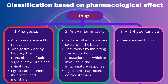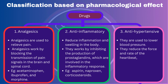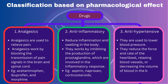Antihypertensive drugs: They are used to lower blood pressure. They reduce the force and rate of the heartbeat, relax blood vessels, or decrease the volume of blood in the body. They include drugs such as diuretics, beta-blockers, and ACE inhibitors.